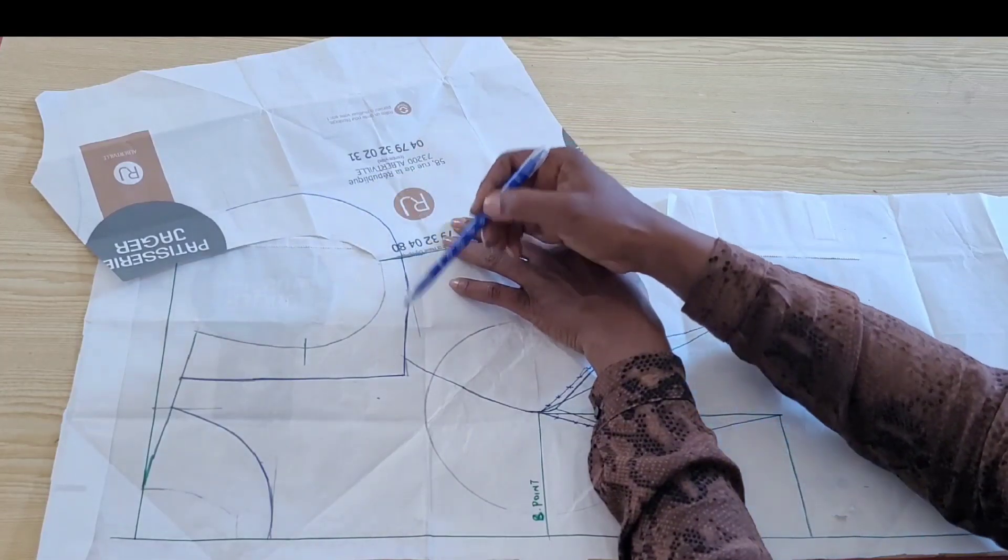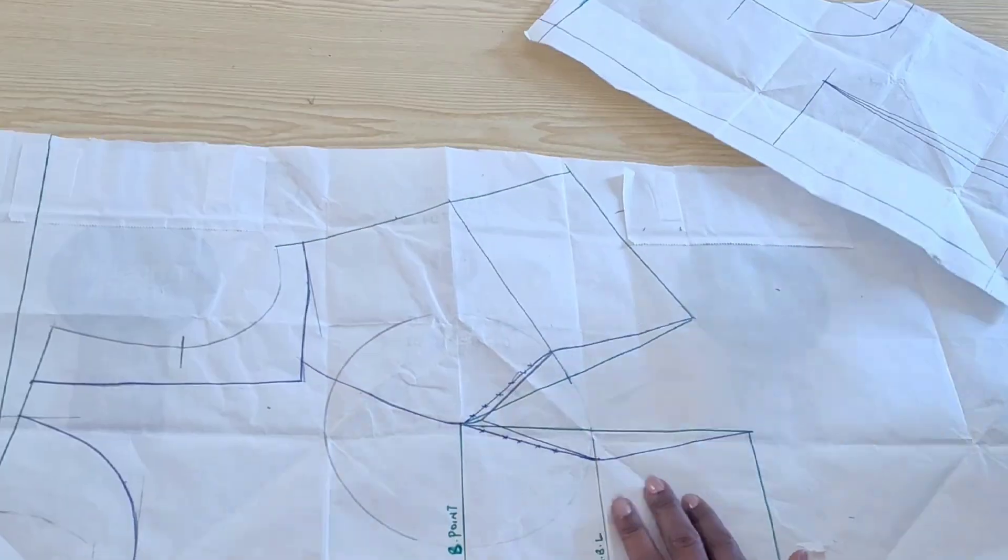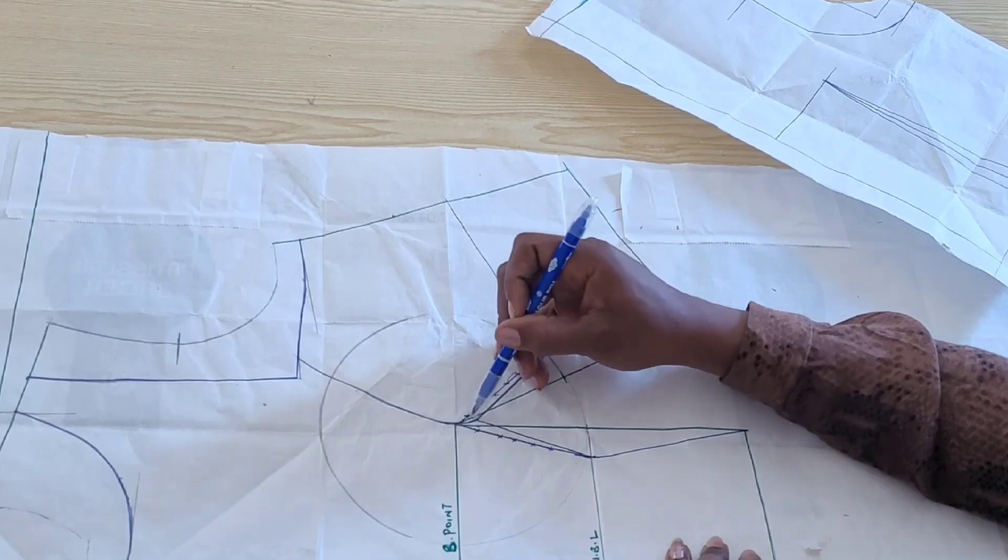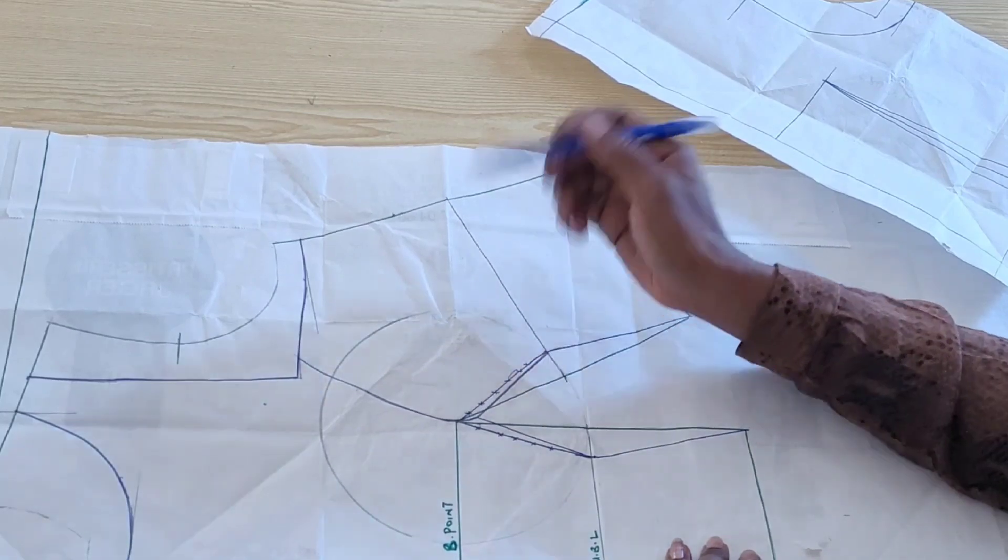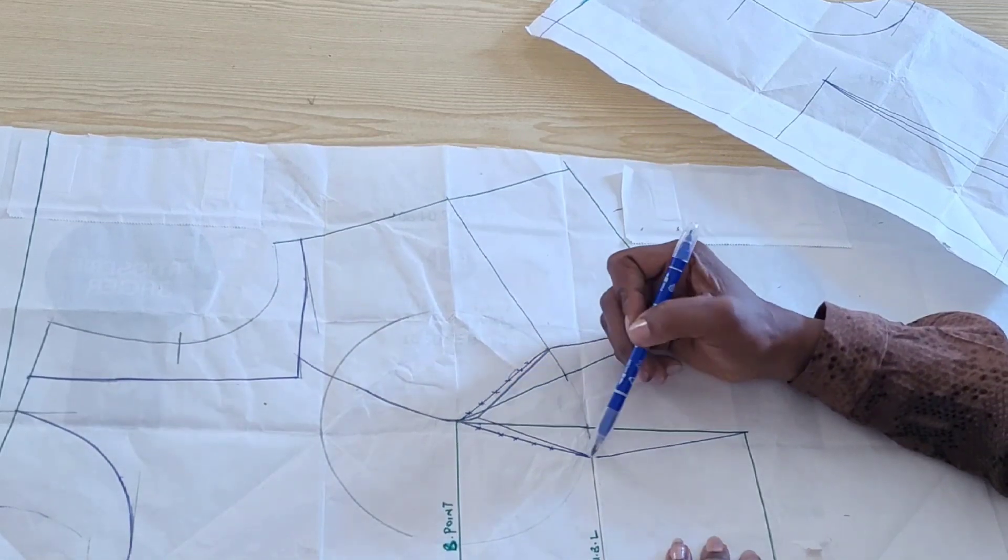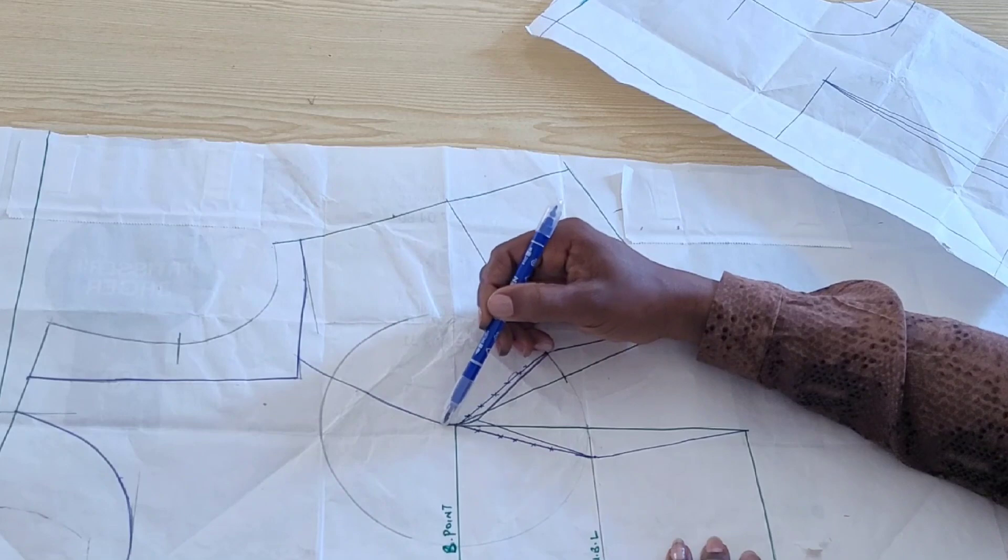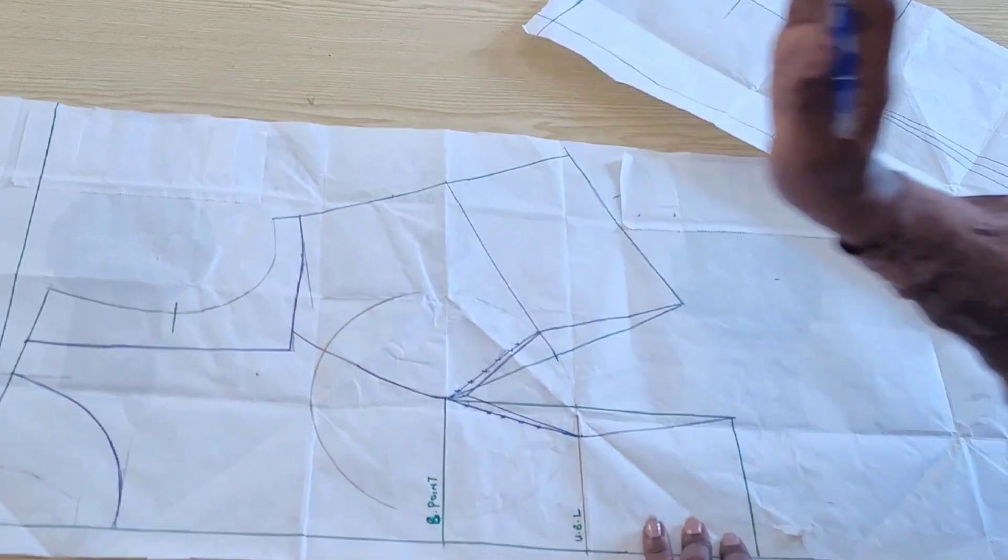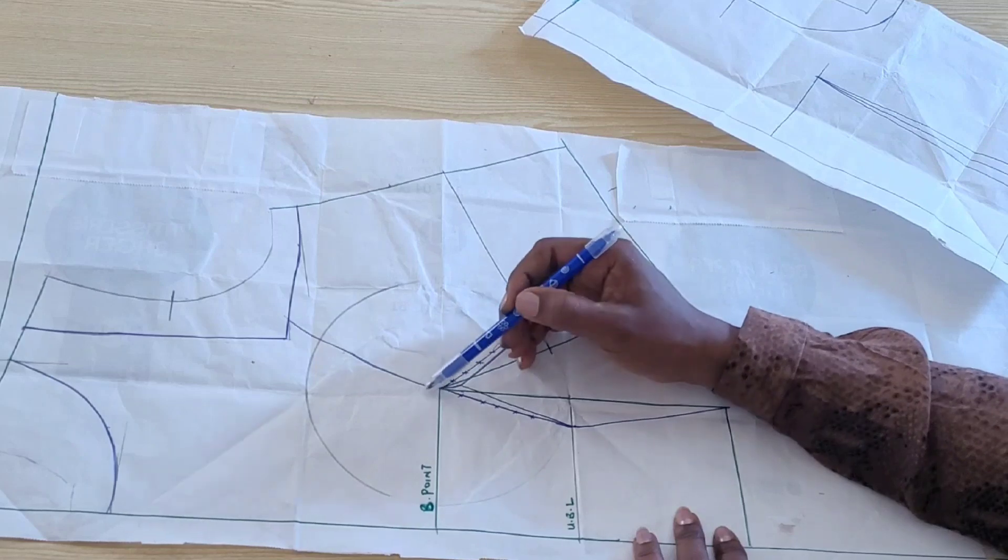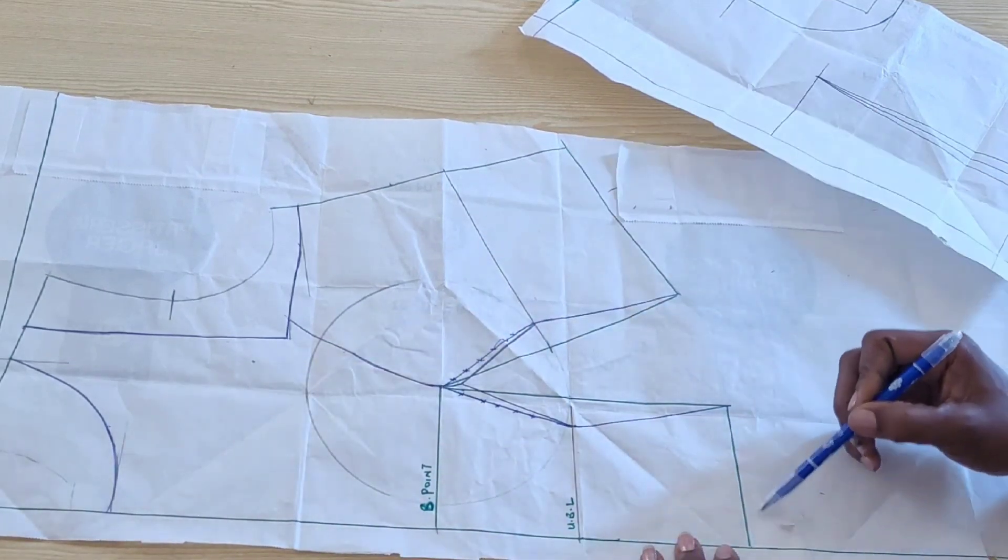So guys, you remember the mistake I said I made when I was drawing in the dart legs. If you notice, I drew directly from the bust point, and here you can see I've corrected that. I came down by half an inch and redrew my dart legs. If you're on the busty side, you can come down by one inch or 0.75 inch as the case may be. And you can see that I've cancelled out the old dart leg.